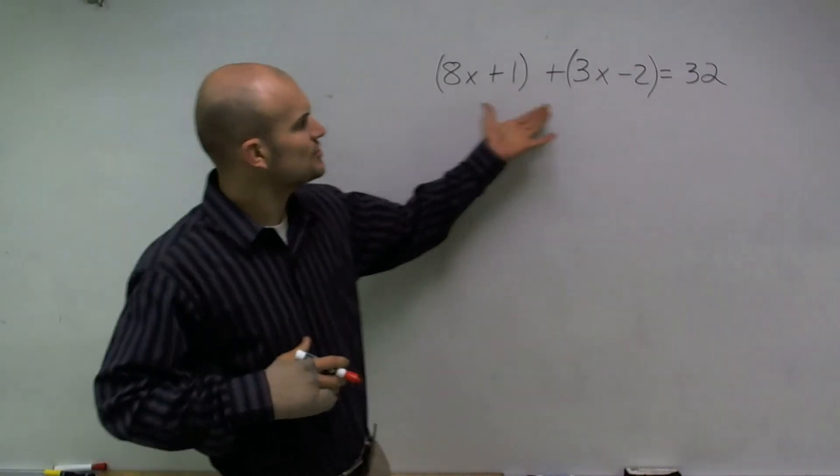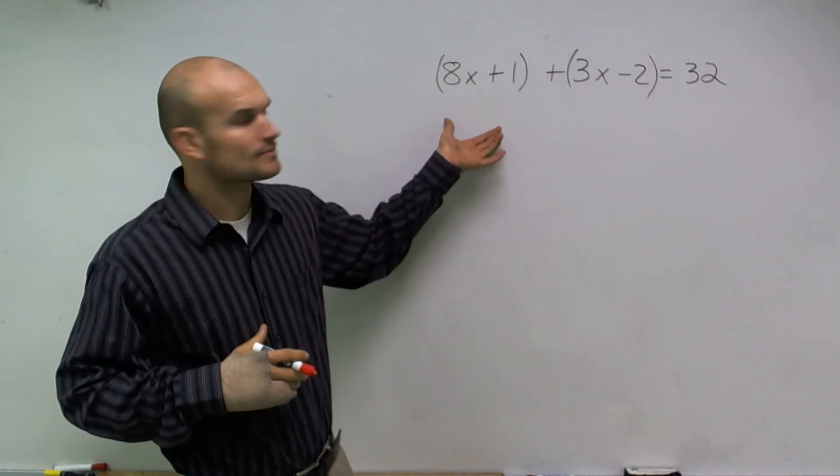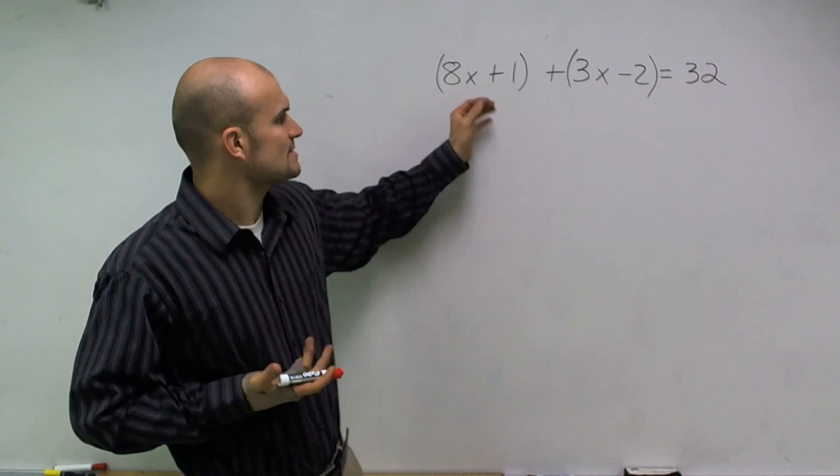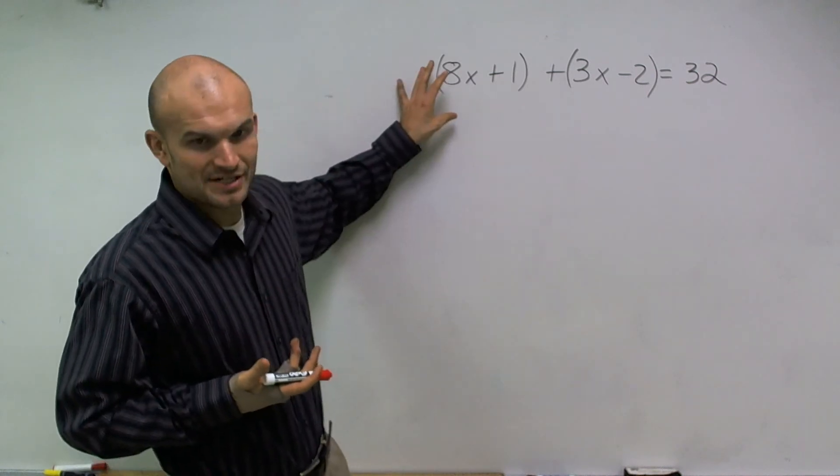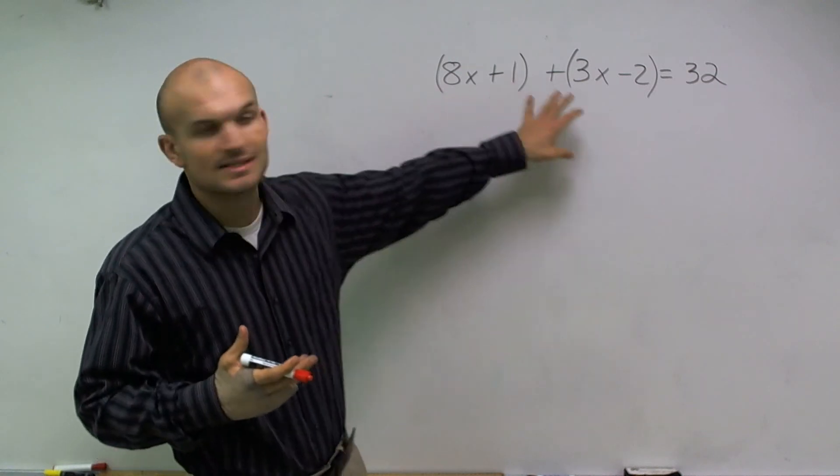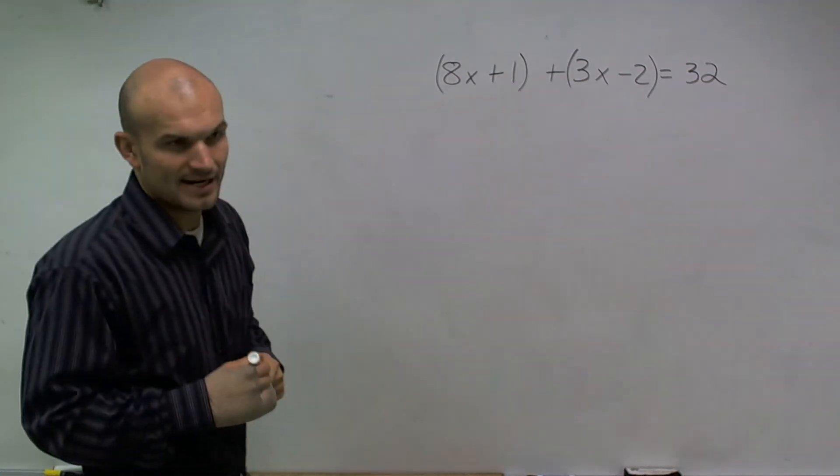Now, we have these two binomials separated by parentheses, but what's this? There's no operation being used against these parentheses, so what I can do is actually rewrite this without the parentheses.